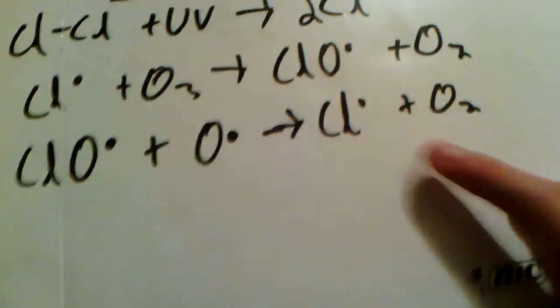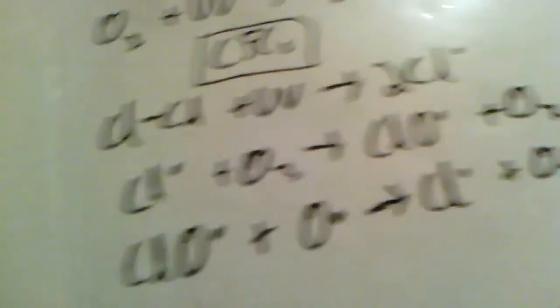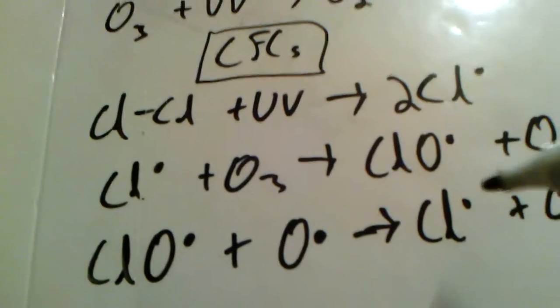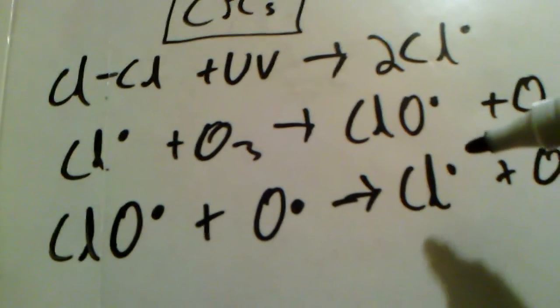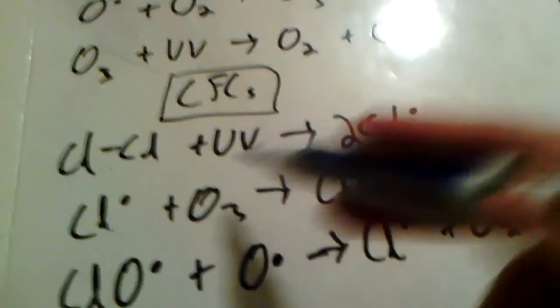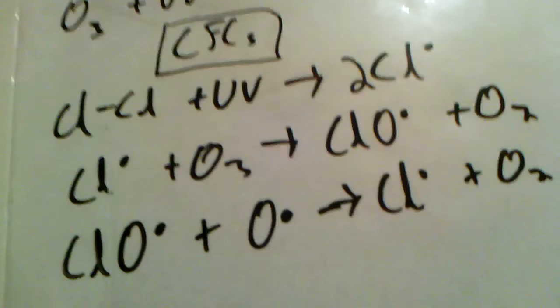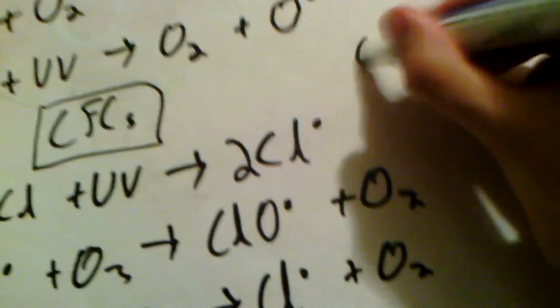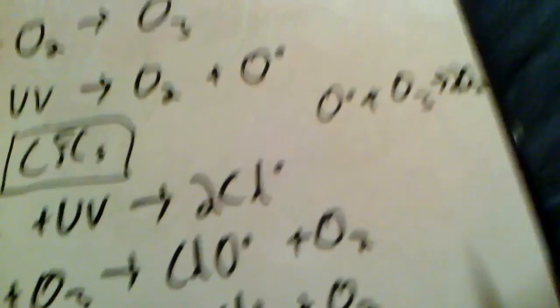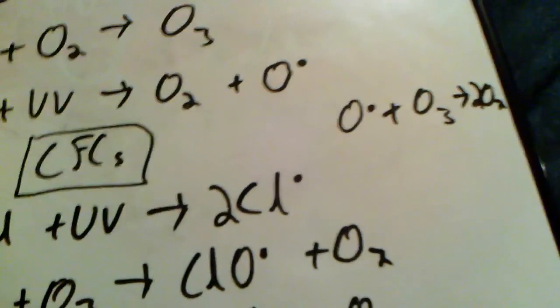So basically, if you look at the whole thing, on the whole, the chlorine hasn't changed at all. It was a free radical here. And at the end of the whole mechanism, it's still a free radical. So it doesn't change. In a way, you can call it a catalyst, because it's not getting used up in the reaction at all. It's just helping the reaction move across. So the overall effect of this is just O3 radical plus O3 is giving two lots of O2, which is no good because the ozone layer has been broken down. So there you go.